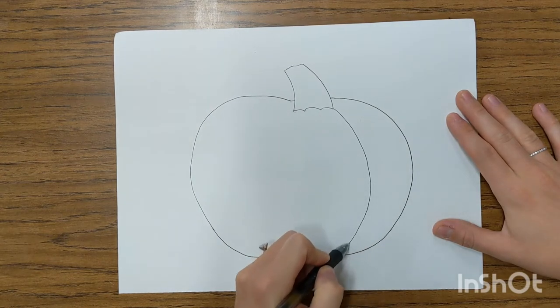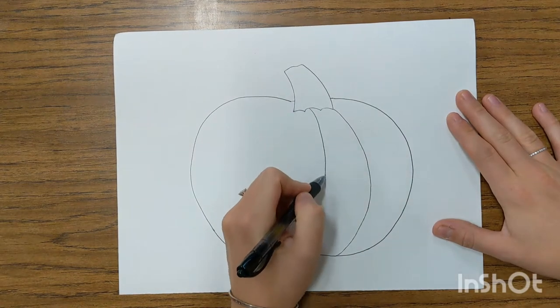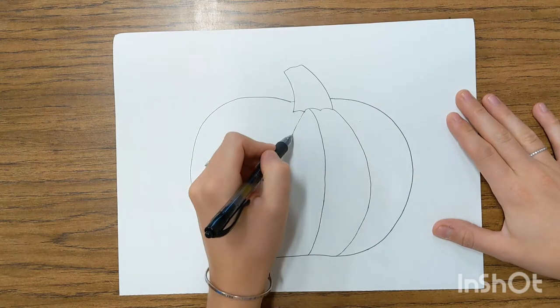Now we need to draw some long curved lines that go all the way from the top of our pumpkin to the bottom.